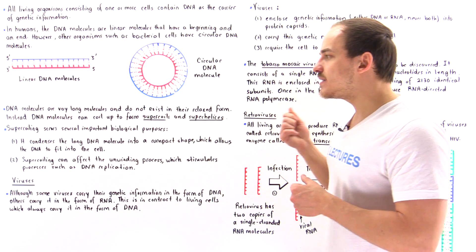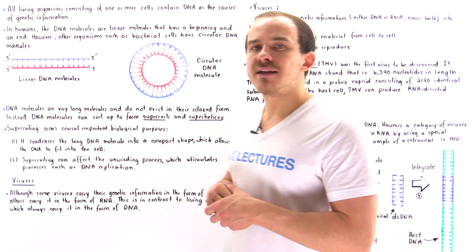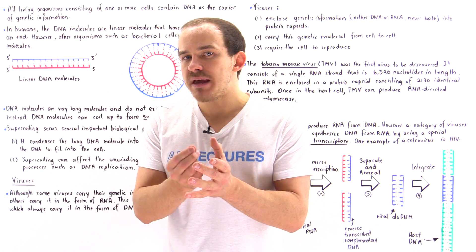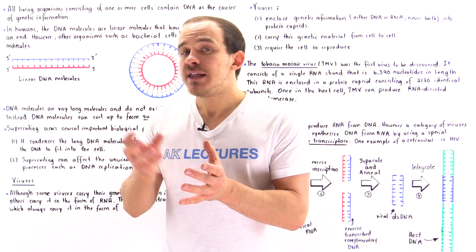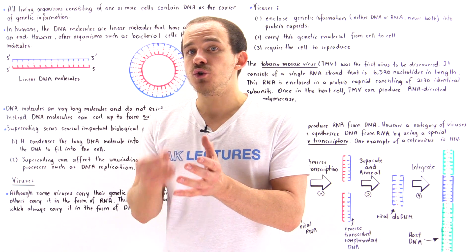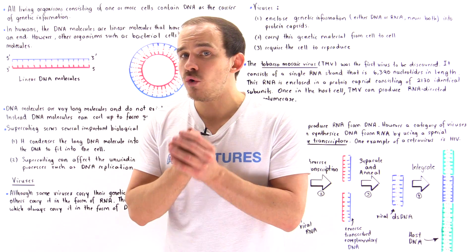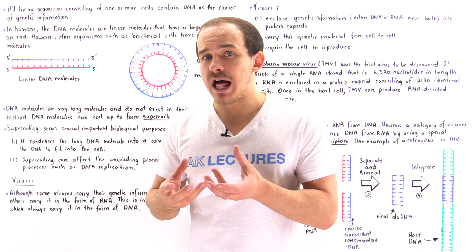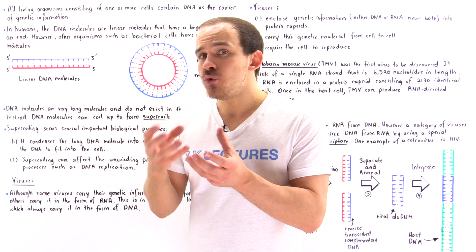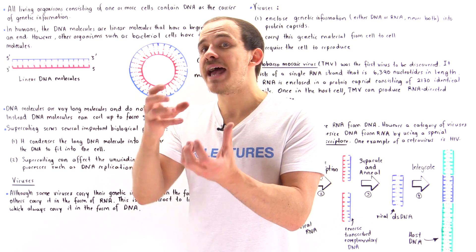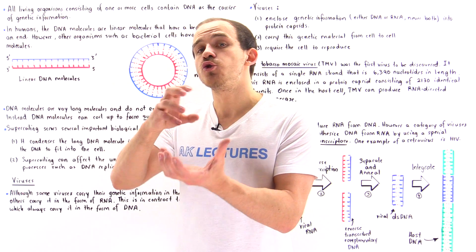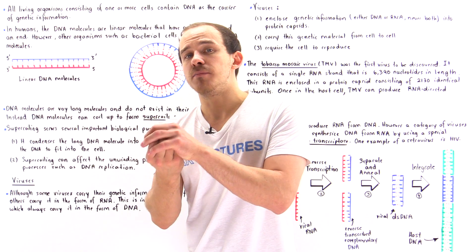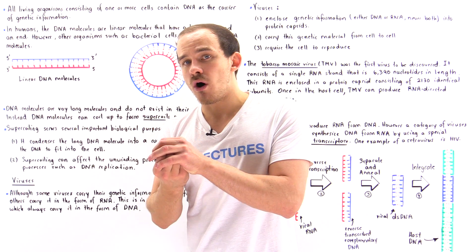Supercoiling basically serves two important biological purposes. Number one, we actually want to be able to fit that long DNA molecule into the nucleus of our own cells and into the cell structure of that biological cell. To do that, we have to condense the structure into this supercoiled form — into this very compact form that is much, much smaller.